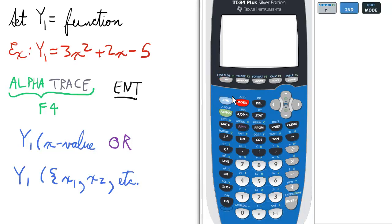Then quit to the home screen. We're going to press alpha and trace for f4. We want to select y1, so we press enter. Then all we need to do is open parentheses and select our x value. Let's say we want to find f of 5. So we press enter. So f of 5 is 80.